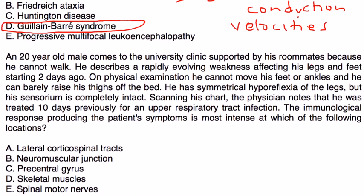And then the final one: a 20-year-old male comes to the university clinic supported by his roommates because he cannot walk. He describes a rapidly evolving weakness affecting his legs and feet starting two days ago. On physical exam, he cannot move his feet or ankles and he can barely raise his thighs off the bed. He has symmetrical hyperreflexia of the legs but his sensorium is completely intact. Scanning his chart, the physician notes that he was treated 10 days previously for an upper respiratory tract infection. The immunological response producing the patient's symptoms is most intense at which of the following locations?